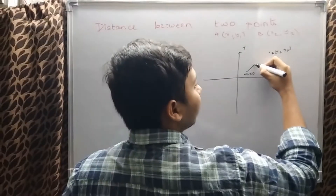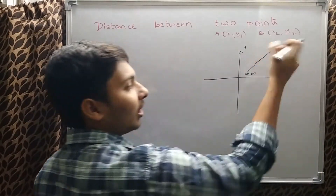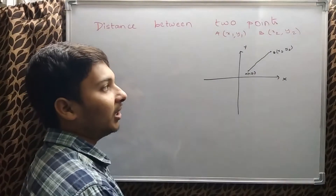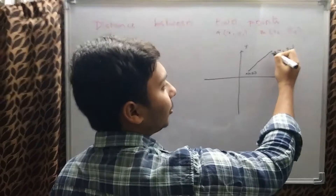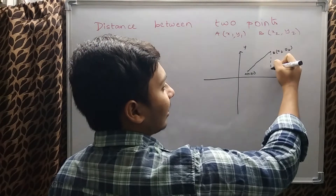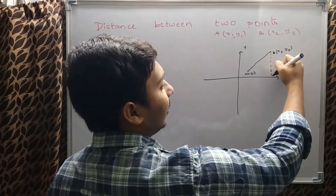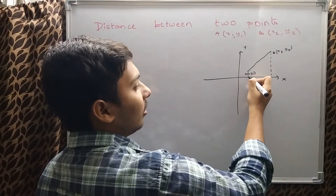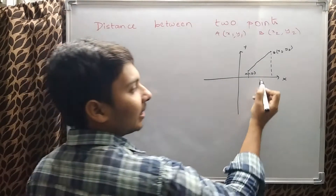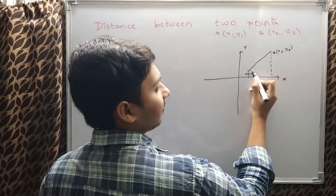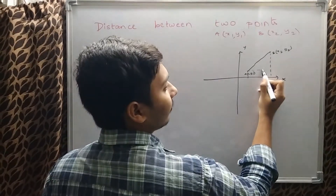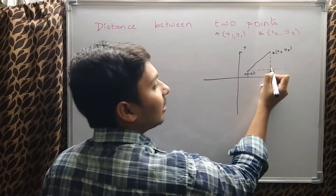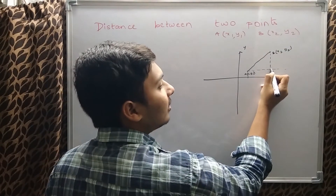Now in this video we are going to find the length of AB. To find the length of AB, draw a perpendicular to the x-axis from point B and from point A, and draw a line parallel to the x-axis from point A which meets the perpendicular from B at a point C.